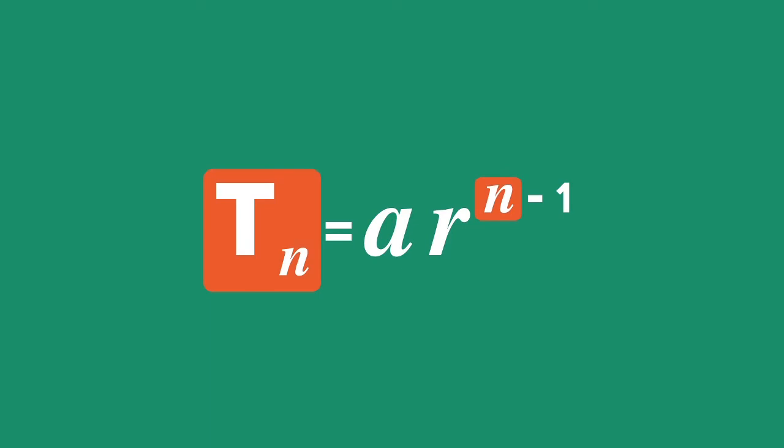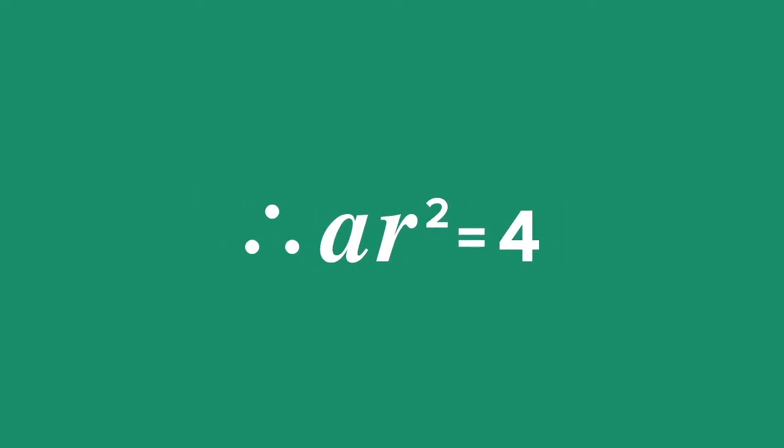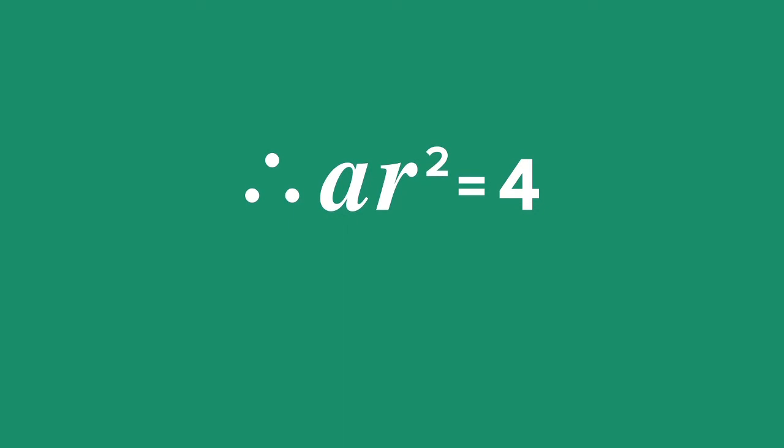T3 equals a times r to the power of n minus 1 equals 4, therefore a times r squared equals 4. This is Equation 1.